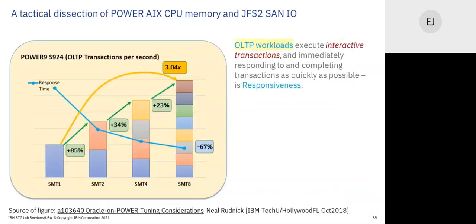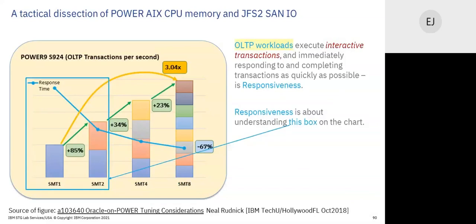Going back to Neil's chart: SMT1 and SMT2 have the highest response time — meaning the shortest response time — because if you divide the core by one or two, each thread can run longer in a 10-millisecond interval. The definition of responsiveness is running longer in every interval, and thus the transaction completes in fewer overall intervals.